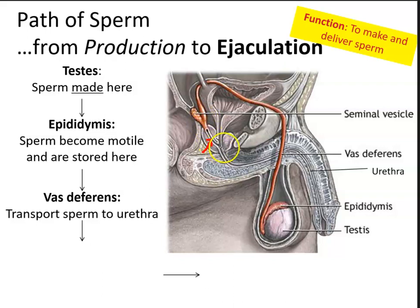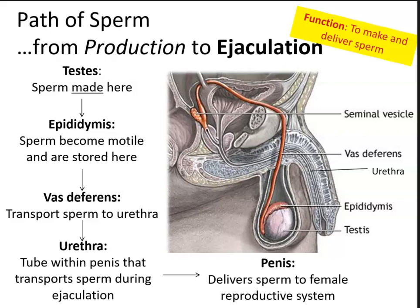From the ejaculatory duct, sperm will travel to the urethra — first the prostatic urethra. The urethra is the tube within the penis that transports sperm during ejaculation. We can see that tube going through the corpus spongiosum, which allows sperm to travel through the penis, delivering sperm to the female reproductive system.